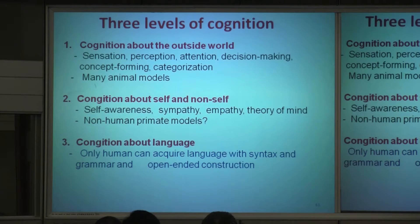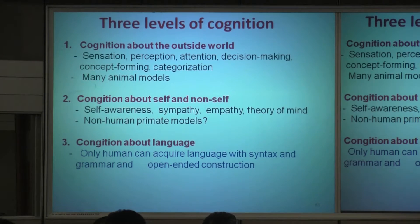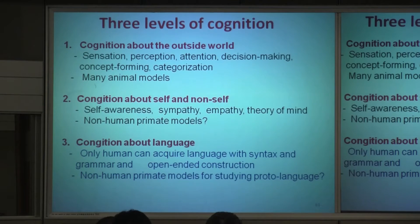Language ability is uniquely human, because only humans can acquire language with syntax and grammar, and it has an open-ended construction of sentences. No animal has it. Chimps — you can train chimps for years and years. They can recognize symbols, but not language. They cannot form sentences. Non-human primates can still serve as a model for understanding some aspects of this.